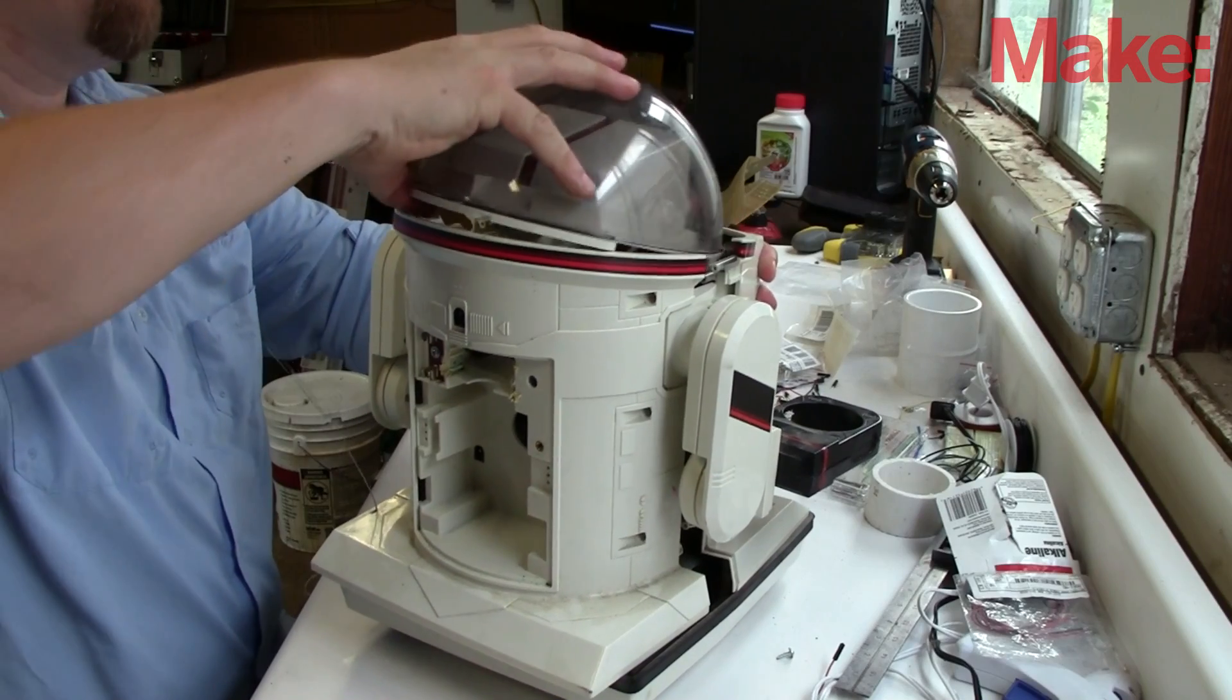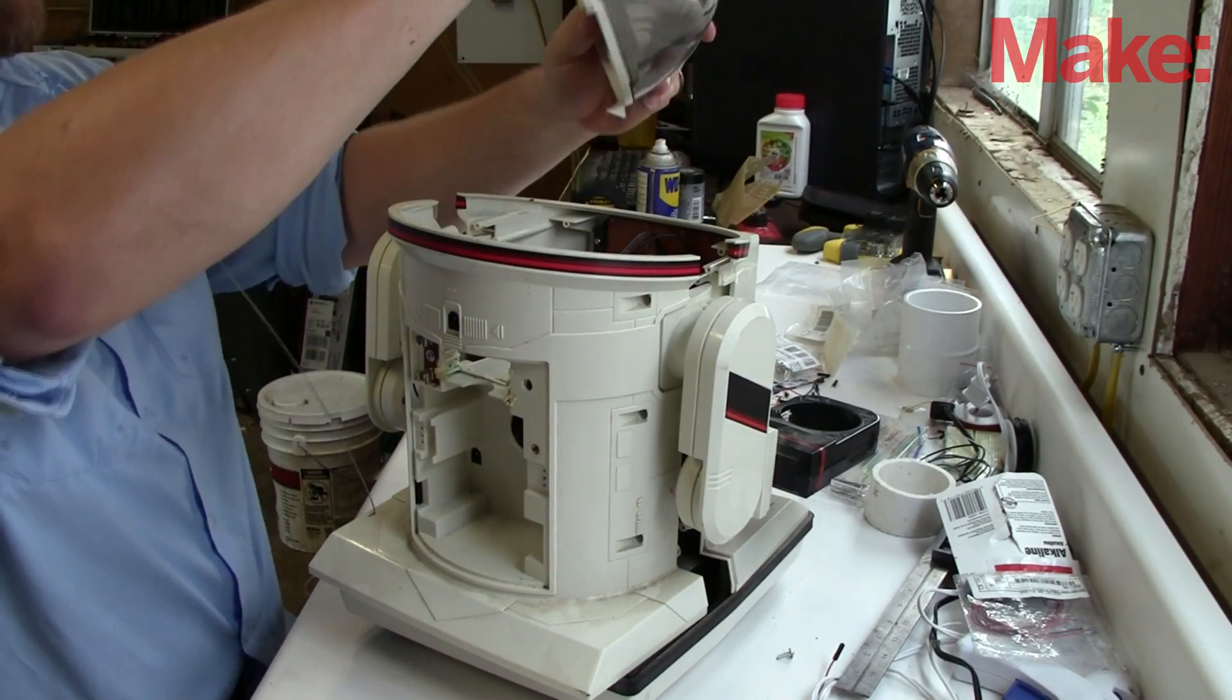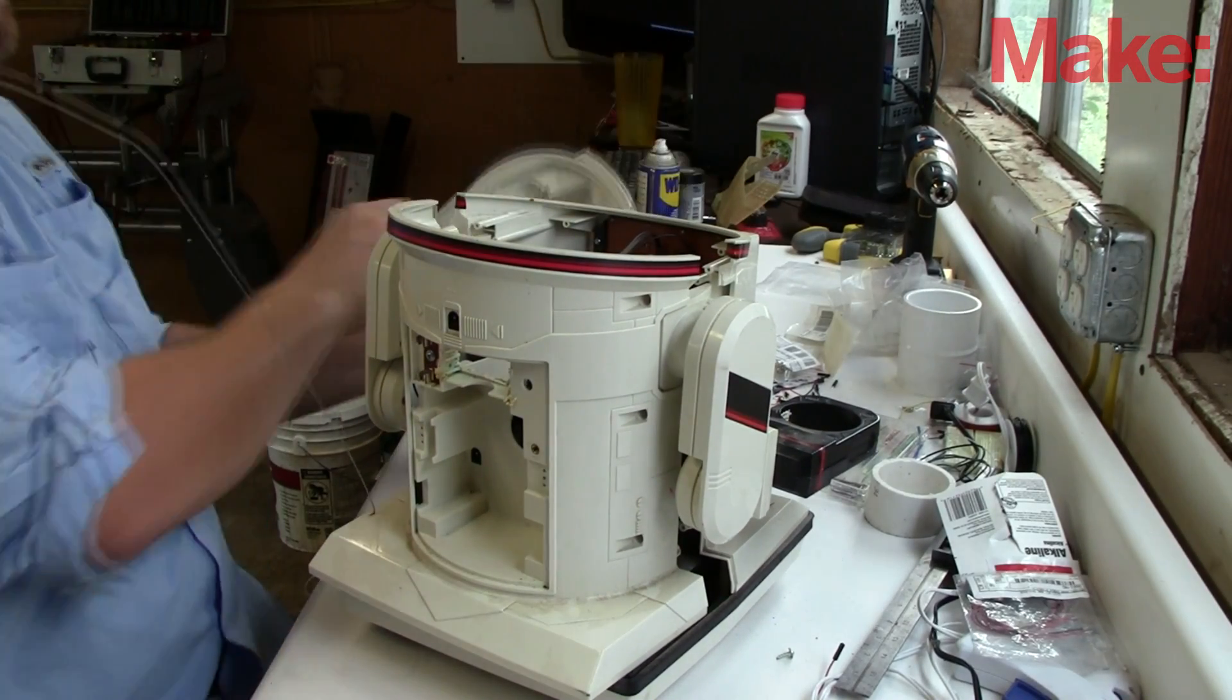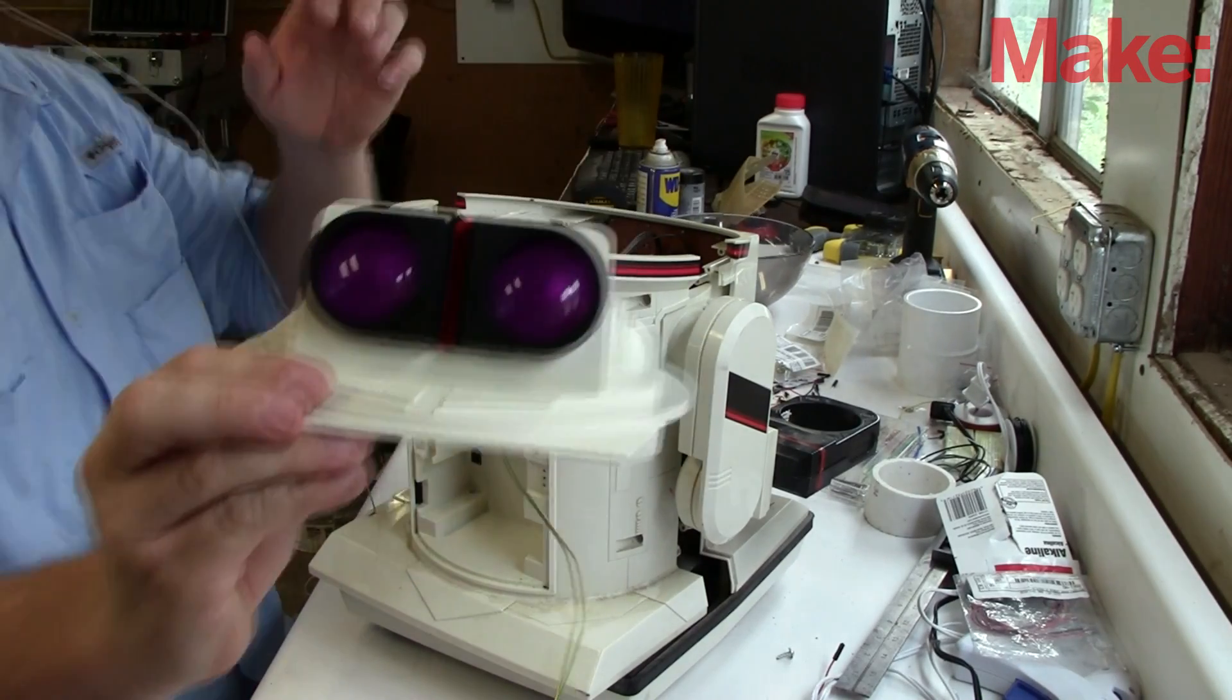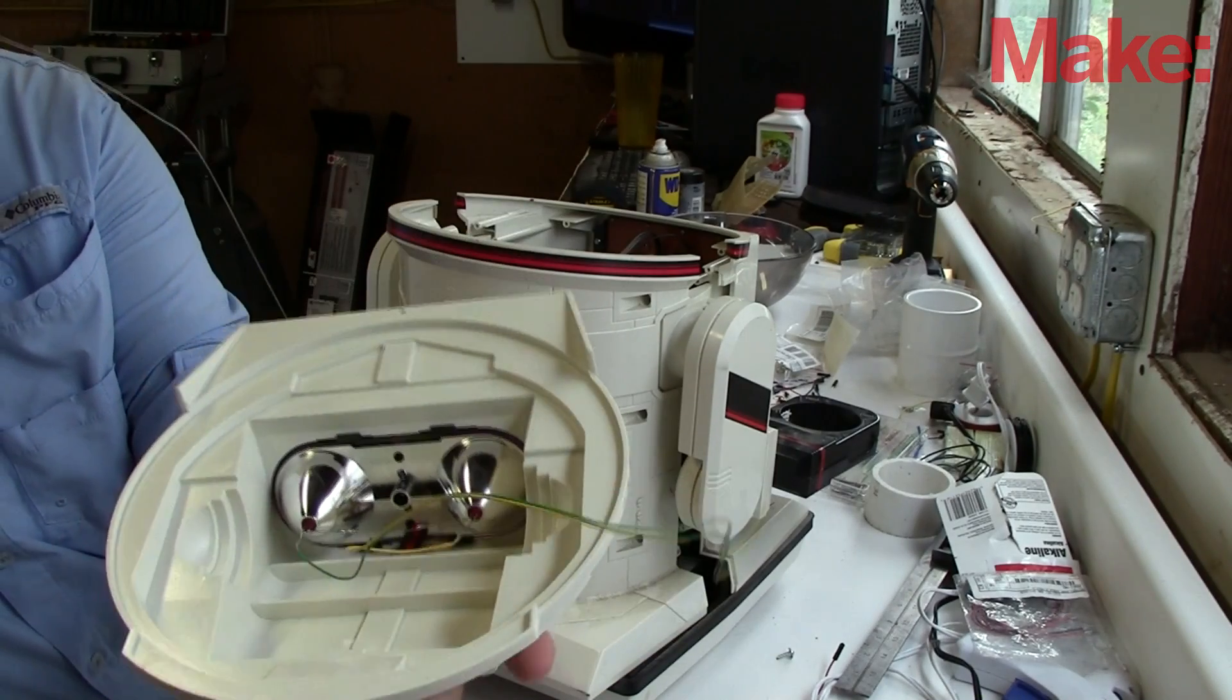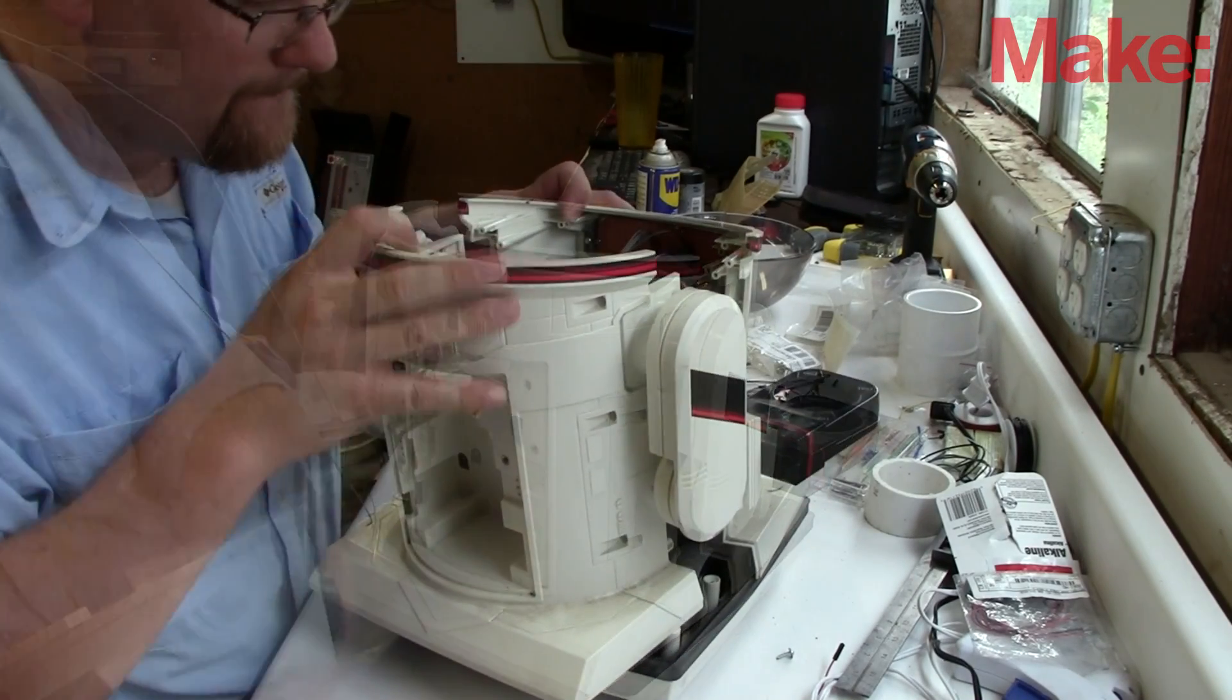The body part comes apart in two pieces. The head dome is a separate piece. I see here that there's some lights in the eyes of the robot - two little LEDs here. Those might come in handy later. I might leave them in just for a little fun.